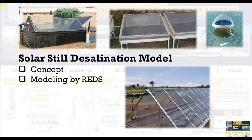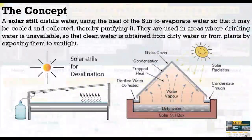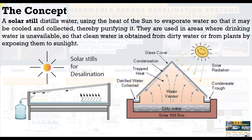What is the main concept? How can we run our model? Solar still is a simple method to desalinate water. Solar still distillates water using the heat of the sun to evaporate water so that it may be cooled and collected, thereby purifying it.